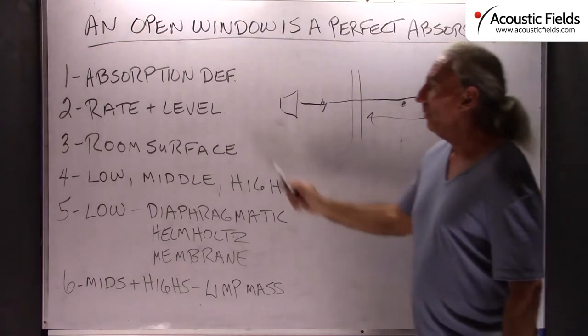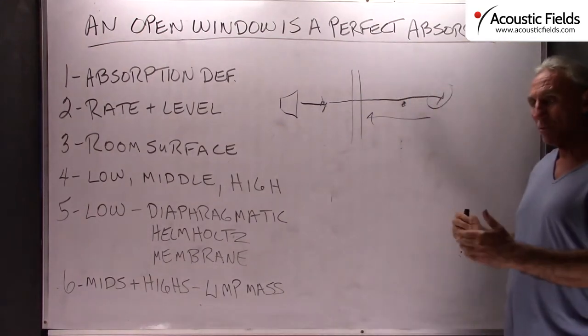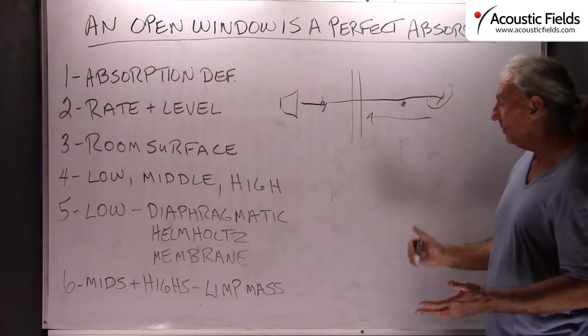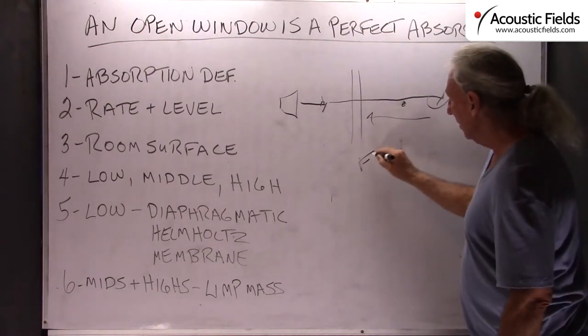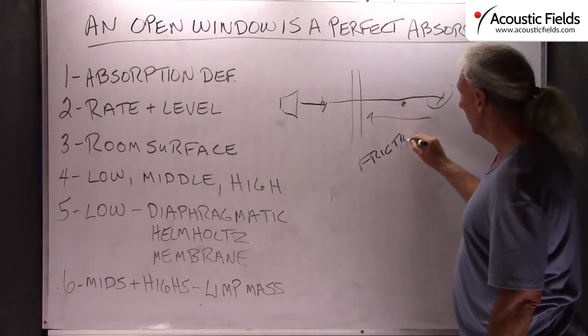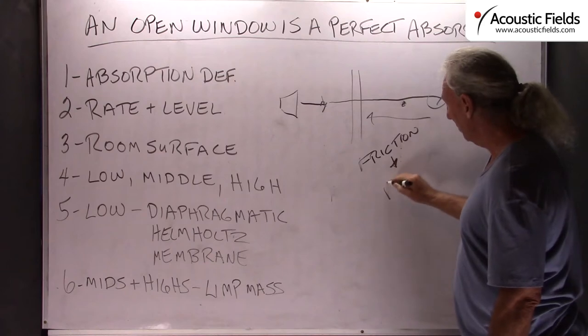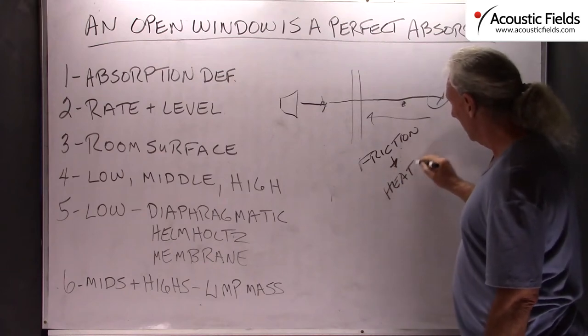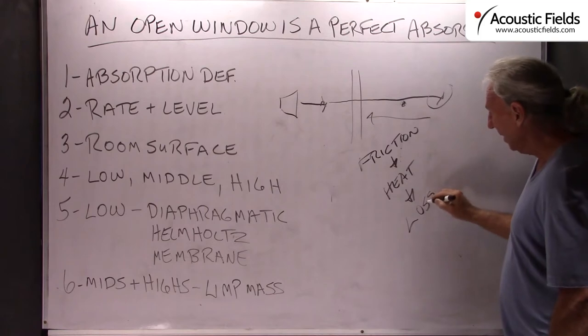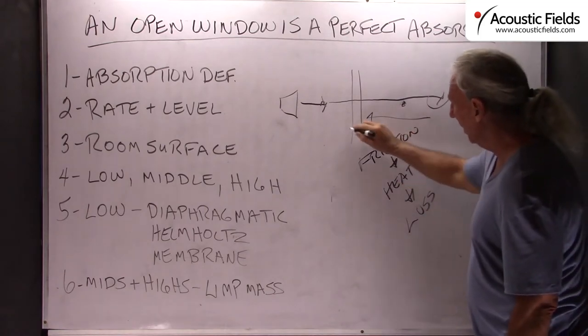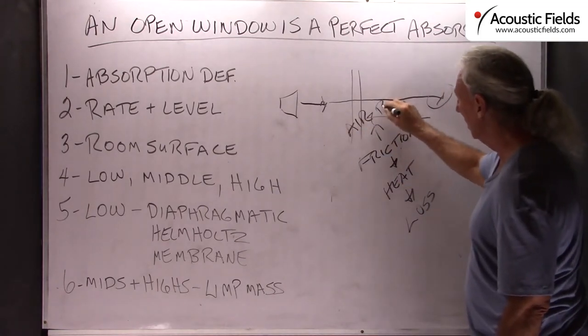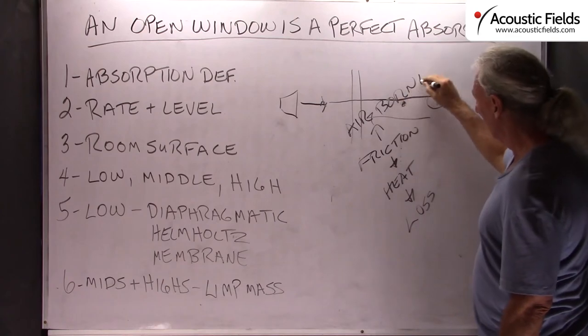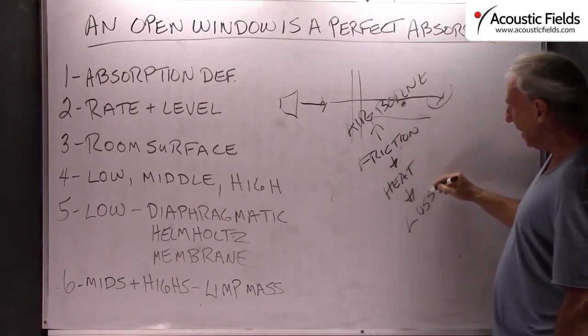So what is the definition of absorption? What are we trying to do? We're trying to do an energy transformation. We're trying to take the process and create friction so that friction produces heat which produces loss. So we go from airborne to friction to heat to loss.